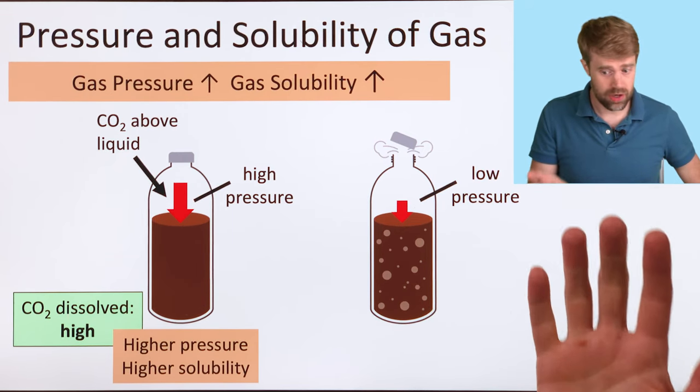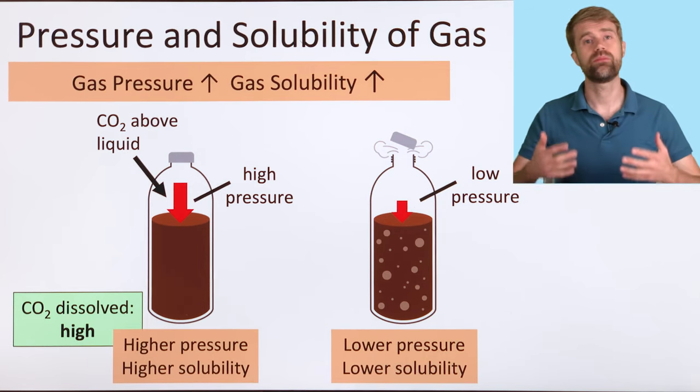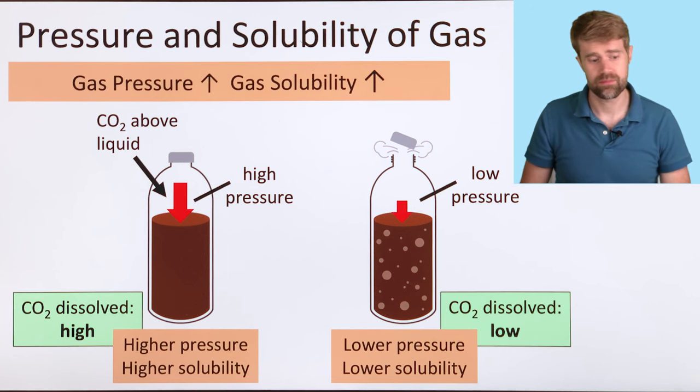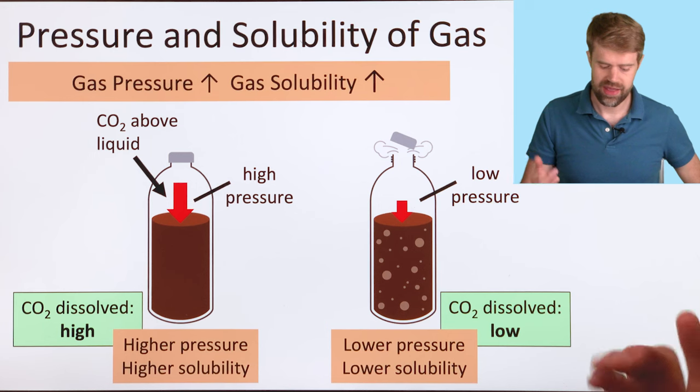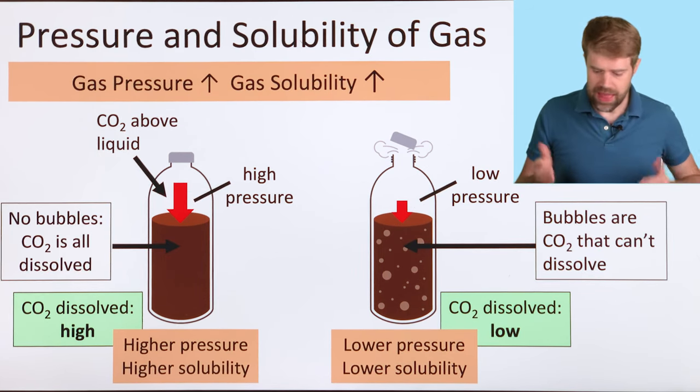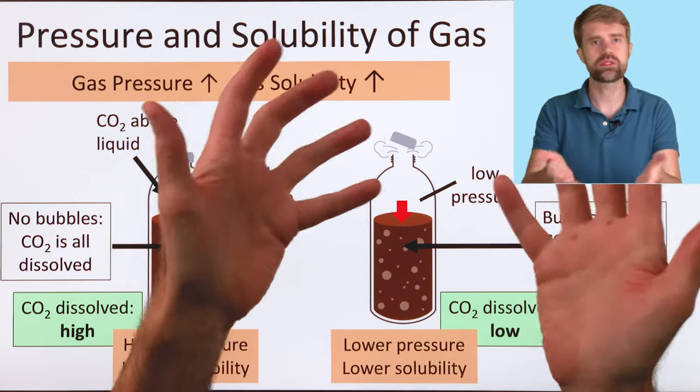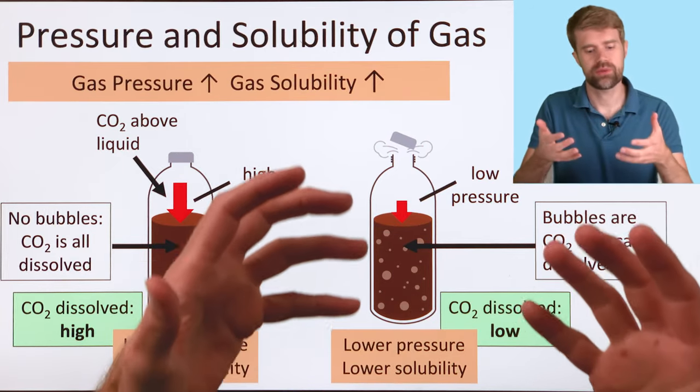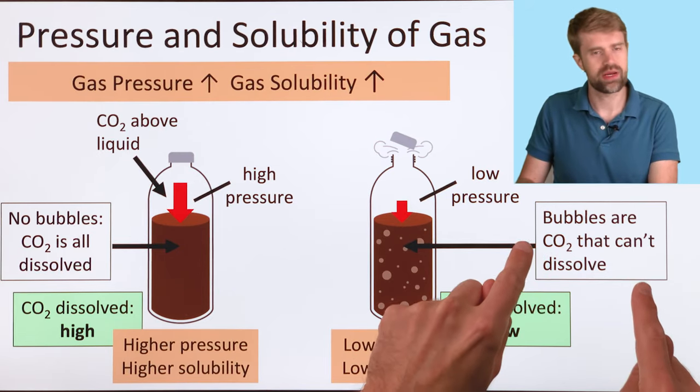So what happens to the carbon dioxide dissolved in the soda? Its solubility is linked to pressure. Lower pressure, lower solubility. So its solubility decreases. Now, less carbon dioxide can dissolve, and the extra carbon dioxide that can't dissolve anymore, it comes out of the solution. You can see it bubbling out. That's what gives soda its fizz. We see bubbles when gas can't dissolve anymore.